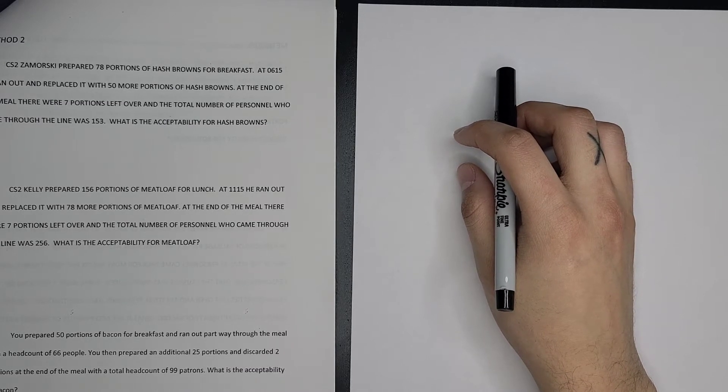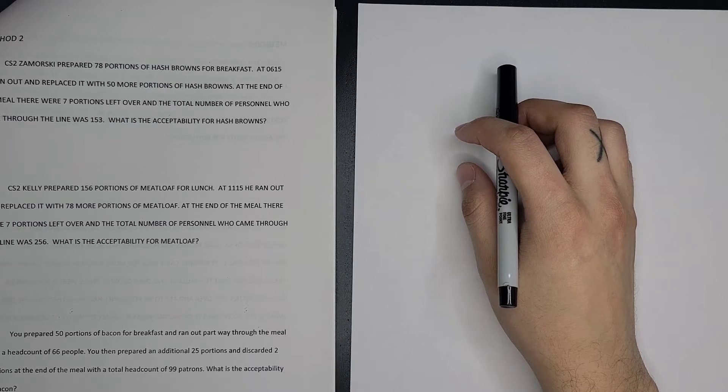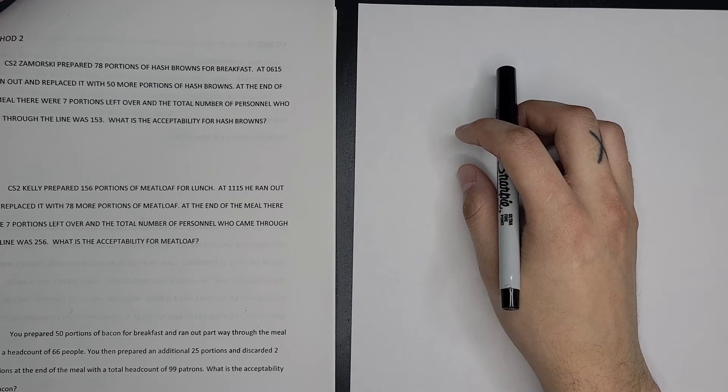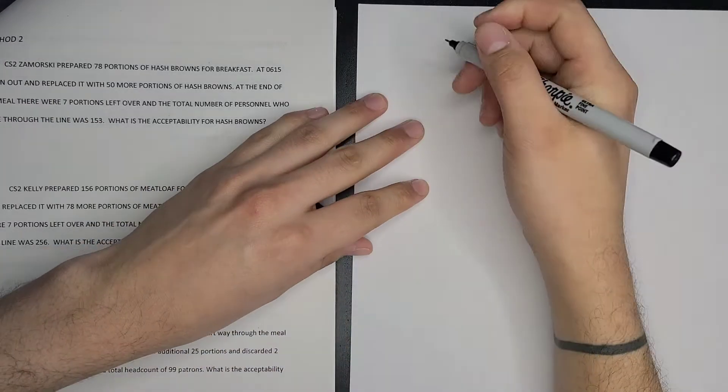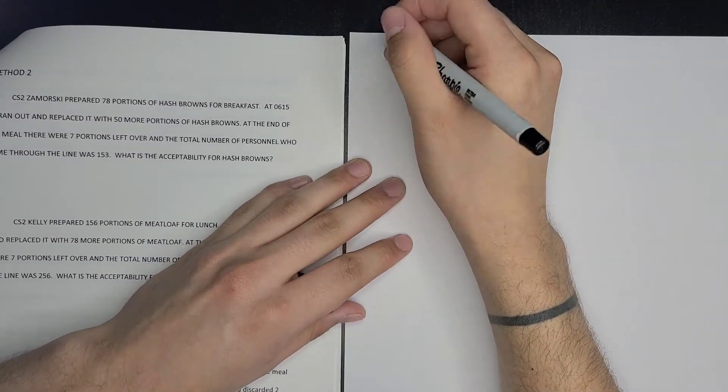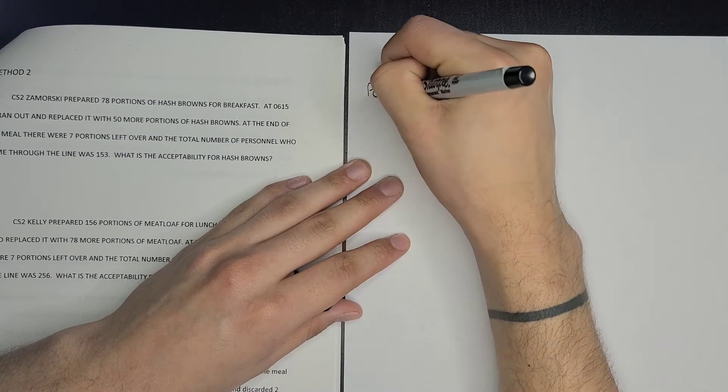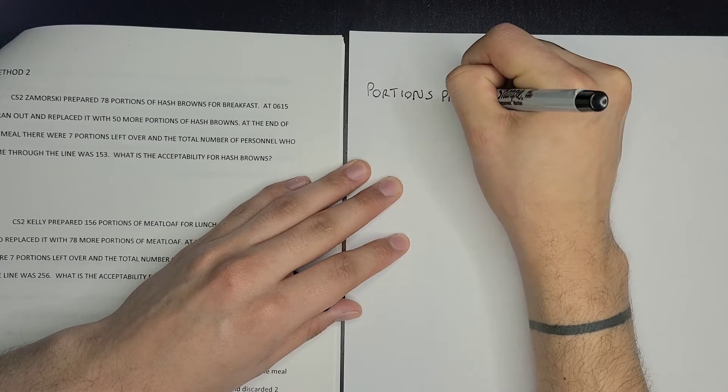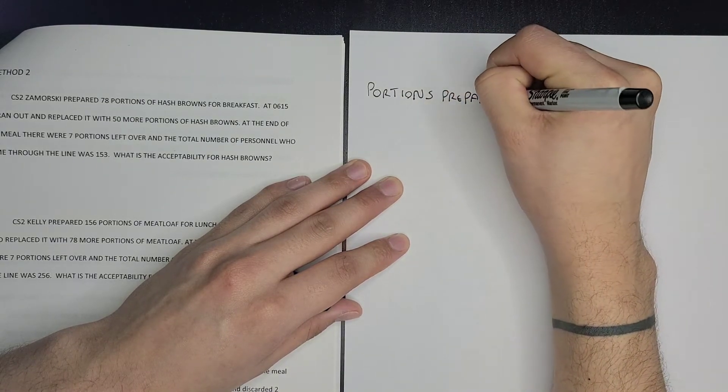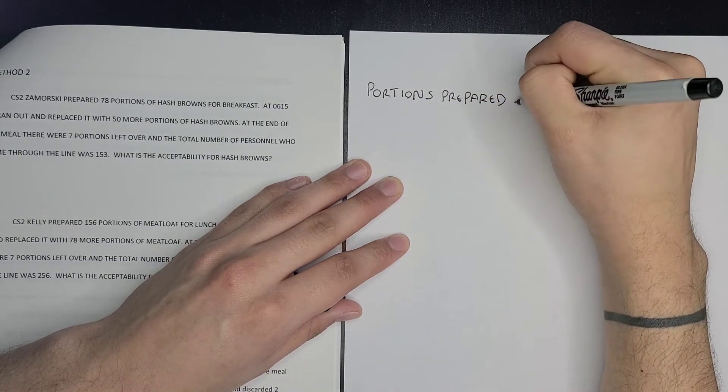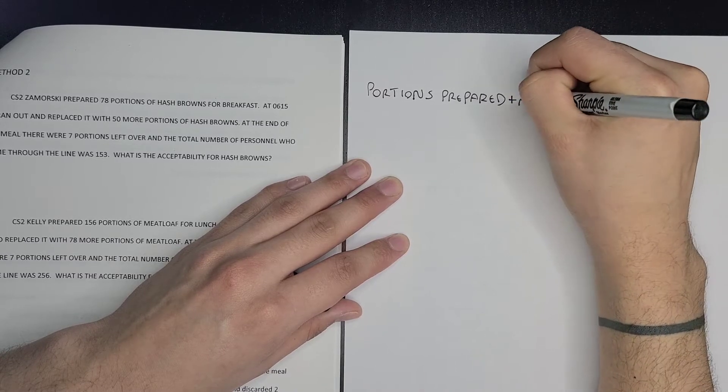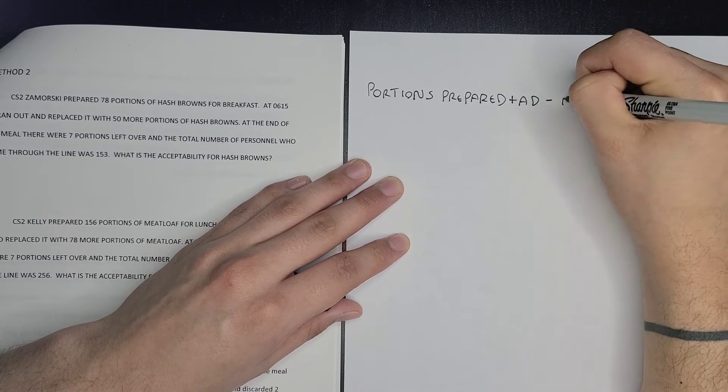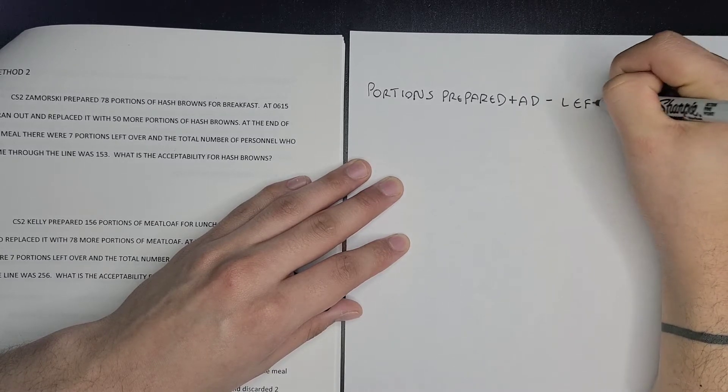So the second method is used when the menu item prepared runs out and an additional amount of the same food item is prepared.